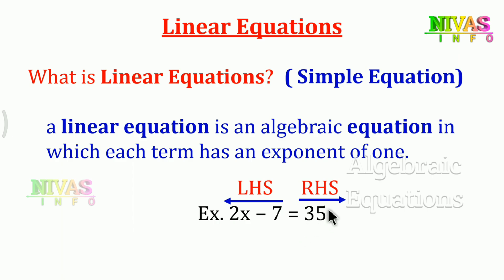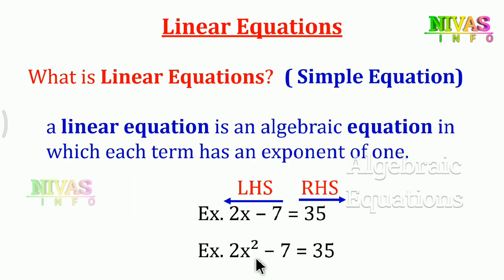In this case, the exponent value is 0 for constants like 35. For x, the exponent is equal to 1, and for the coefficient 2 it is also equal to 1. In a linear equation such as 2x minus 7 equals 35, these are linear equations because the variable's exponent is 1.